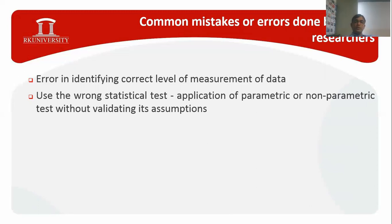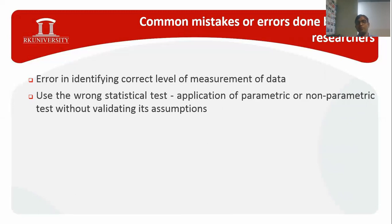The second mistake is using the wrong statistical test. People often think that whenever there are numbers, they can directly apply all tests on all data — but that is a wrong assumption. Even quantitative data like height or weight of patients cannot have parametric tests applied directly. There are certain assumptions for using parametric versus non-parametric tests. As a researcher, especially a PhD scholar, you first need to validate those assumptions — whether the data is fit for a parametric test or not. Do not make the mistake of using a wrong statistical test without validating its assumptions.